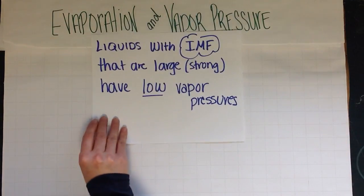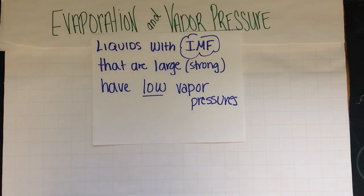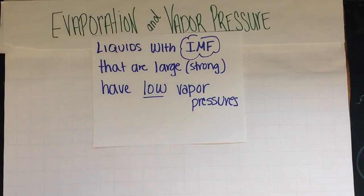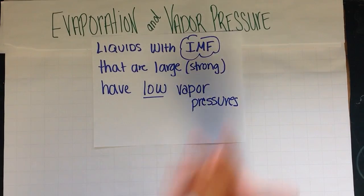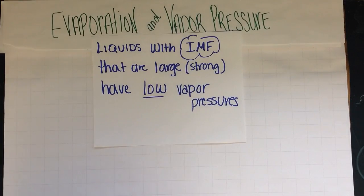What about the reverse? Liquids with intermolecular forces that are large or strong are going to require a lot of energy. Therefore, they're going to have lower vapor pressures — they're not going to evaporate very quickly. It's going to take a lot longer for them to evaporate, which means having a lower vapor pressure.